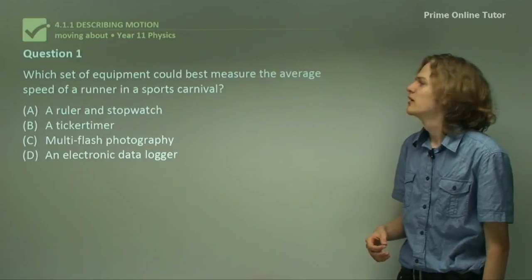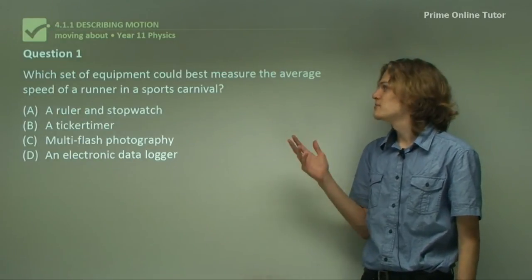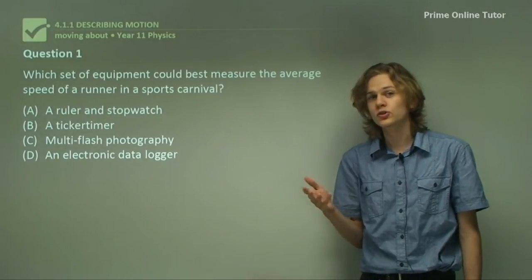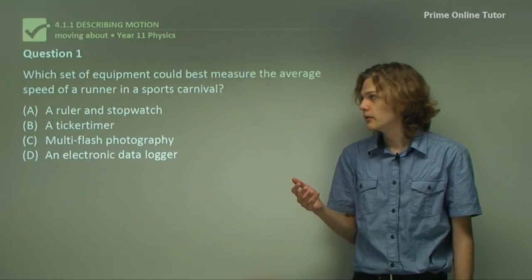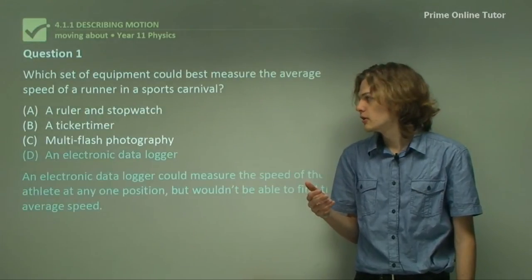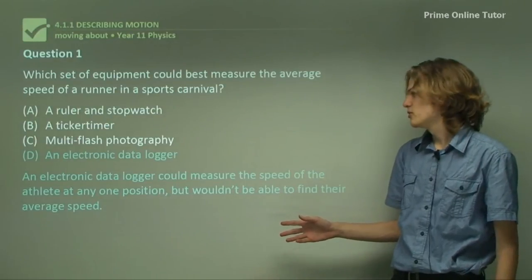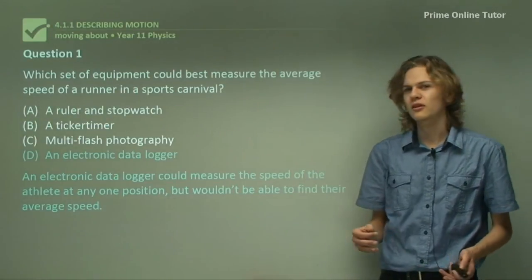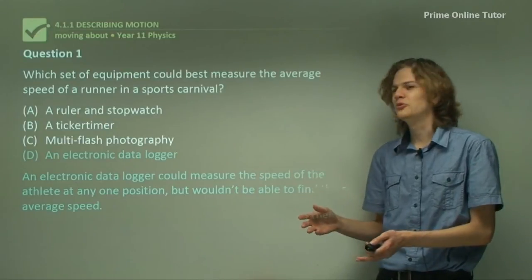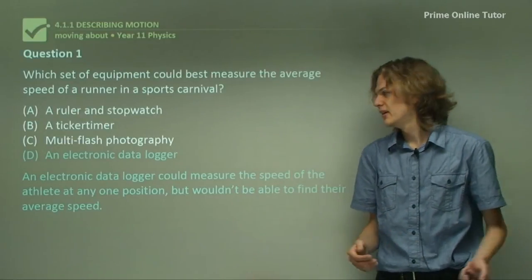Question one. Which set of equipment could best measure the average speed of a runner in a sports carnival? Well, let's look at the options. An electronic data logger probably wouldn't be too great. I mean, it could measure the speed of the athlete at one position, but it wouldn't be able to measure the whole race. So it's not the greatest idea.